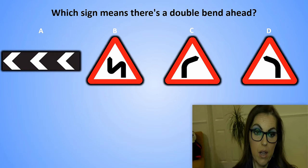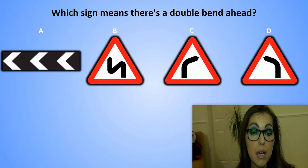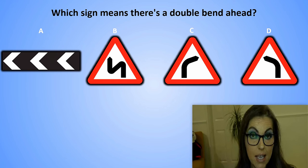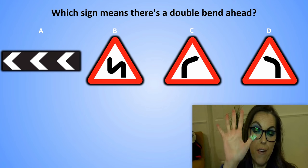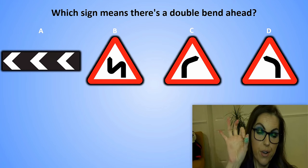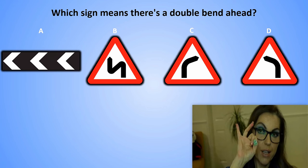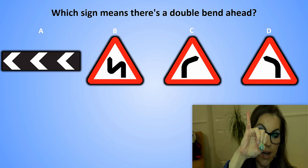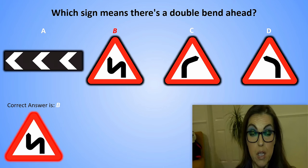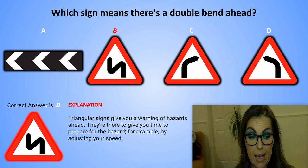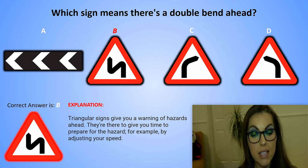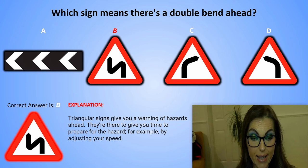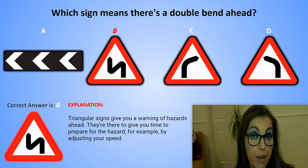Which sign means there is a double bend ahead? Sign A, Sign B, Sign C, or Sign D? The correct answer is B. Explanation: Triangular signs give you a warning of hazards ahead. They are there to give you time to prepare for the hazard — for example, by adjusting your speed.